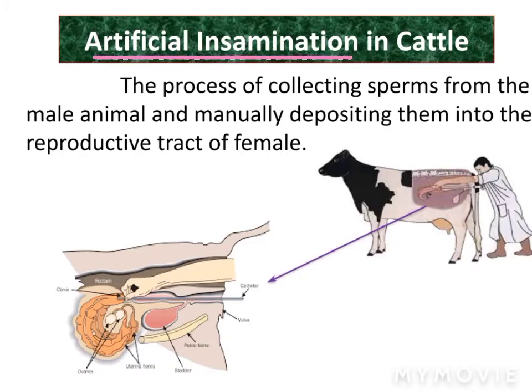What is artificial insemination in cattle? It is the process of collecting sperm from a male animal and manually depositing them into the reproductive tract of the female.